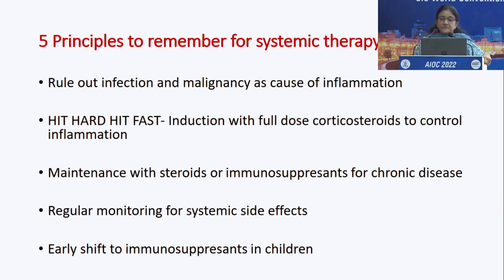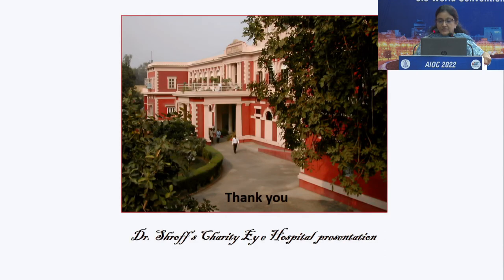Five principles to remember for systemic therapy in uveitis: First, rule out infection and malignancy before starting steroids or immunosuppressants. Second, hit hard and fast in the induction phase with full-dose corticosteroids to control inflammation. Third, maintenance with steroids or immunosuppressants is required for chronic inflammatory diseases. Fourth, regular monitoring is required for systemic side effects of both immunosuppressants and corticosteroids. Fifth, shift children early to immunosuppressants, as long-term corticosteroids can hamper their growth. Thank you for your patient listening.